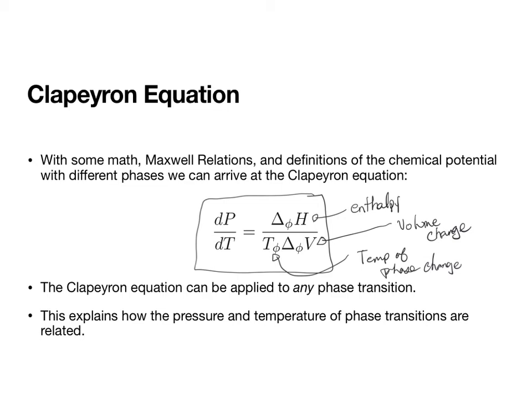Now, the Clapeyron equation is often, we're going to write it in terms of ΔH of vaporization. But it turns out that the Clapeyron equation is generic. It can be applied to any phase transition. And so you can use these relationships to find ΔH of fusion as you change pressure or as you change temperature. And this really is working to explain how the pressure and the temperature of phase transitions are related.